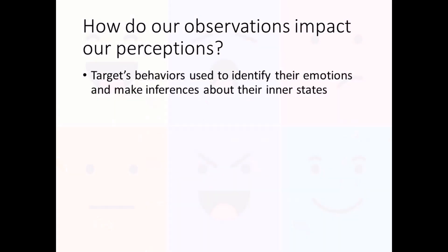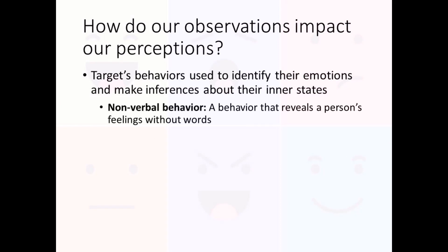We also observe behaviors to identify emotions and make inferences about a target's inner emotional state. Not only do we pay attention to what they say, but we also observe their nonverbal behaviors — behaviors that reveal a person's feelings without using words. The message is communicated through facial expressions, eye gaze, vocal cues, body language, and physical touch. For example, Todorov and colleagues found that participants associated certain facial expressions with certain qualities. They found that people with a U-shaped mouth and raised eyebrows were perceived to be more trustworthy than people with other expressions.